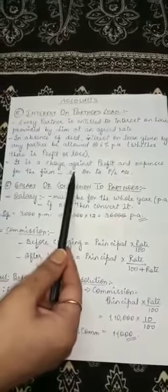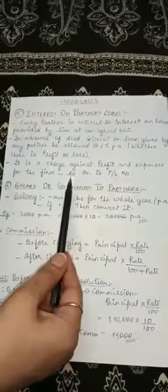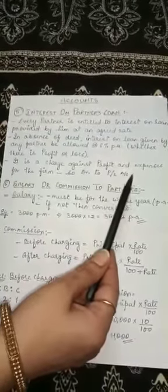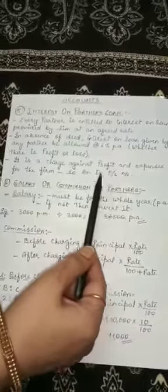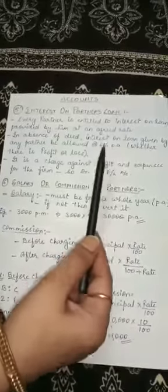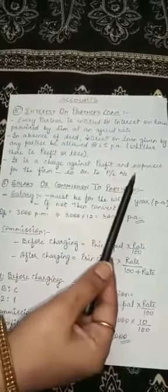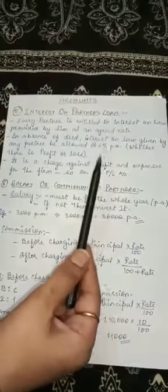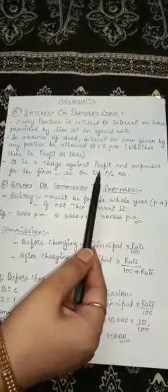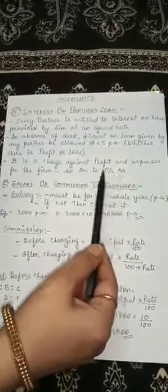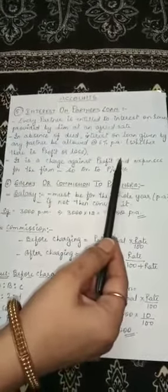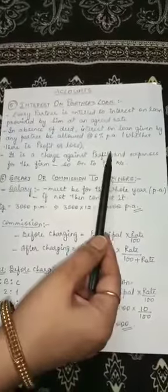This interest on partner's loan is debited to the profit and loss account — it is not mentioned in the profit and loss appropriation account. This interest on partner's loan will be mentioned on the debit side of the profit and loss account as it is a charge against profit.